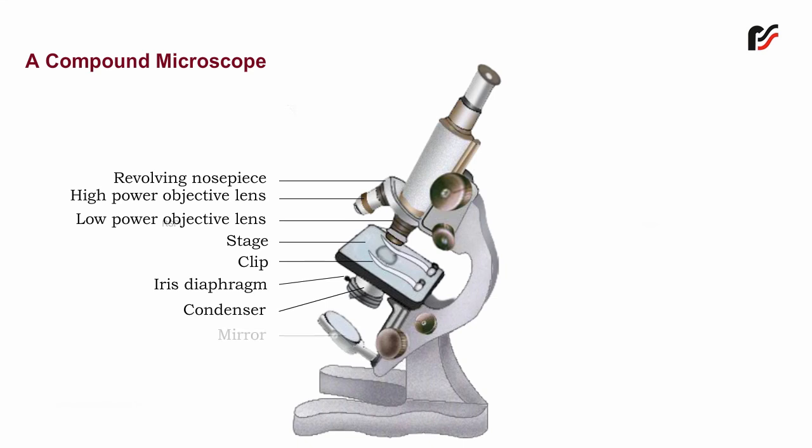Mirror: It is used for reflecting light into the microscope and is located at the lower end of the arm, below the stage. It is concave on one side and plane on the other.